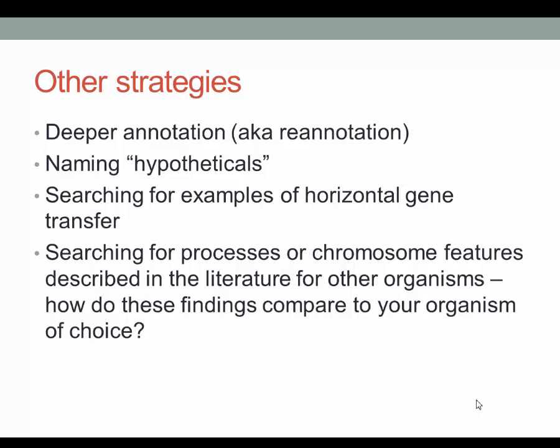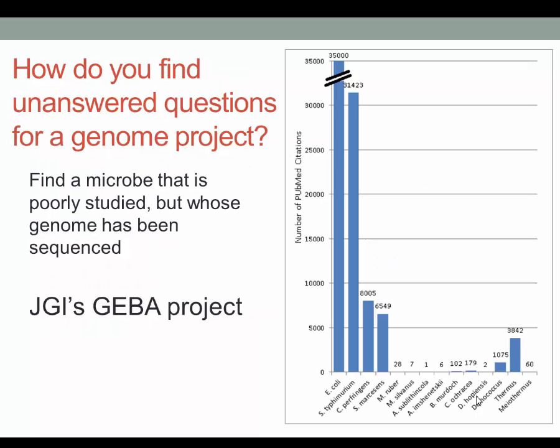Once students are confident using the bioinformatics tools, other tangential questions can be asked. If you don't have your own microbe to analyze, how can you find unanswered questions for a genome project? Currently, there are more than 15,000 complete or draft genome sequences of bacteria and archaea available. These genome sequences, however, show a highly biased phylogenetic distribution compared to the extent of microbial diversity we know of today. This bias has resulted in major gaps in our knowledge of microbial genome complexity and our understanding of the evolution, physiology, and metabolic capacity of microbes in general.